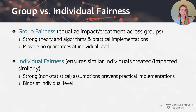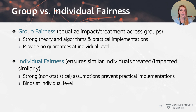We also need to distinguish between group and individual fairness. Group fairness aims to equalize impact or treatment across a group as a whole — there is strong theory, algorithms, and practical implementations at this level. However, guaranteeing fairness at a group level does not allow guarantees at the individual level. Individual fairness ensures that similar individuals are treated or impacted similarly, but strong non-statistical assumptions make practical implementation technically more challenging, even though it binds at the individual level.